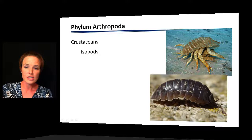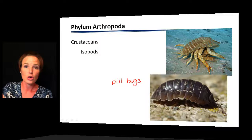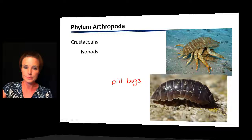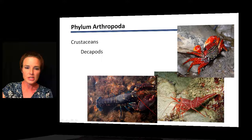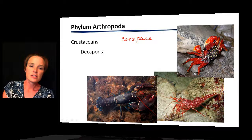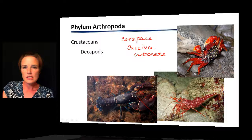Isopods are one group of crustaceans that includes what we call pill bugs, also known as roly-polies. These are terrestrial, though most crustaceans are aquatic. Isopods also include wood lice, and there are marine and freshwater isopods as well. The decapods are probably more familiar — this includes crayfish, lobsters, and crabs. A significant feature of decapods is the carapace, a very hardened part of the exoskeleton reinforced by calcium carbonate, located on the dorsal cephalothorax, providing protection.